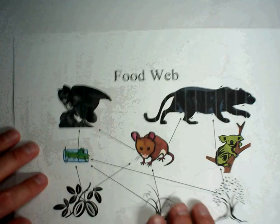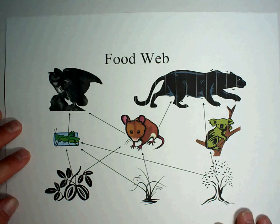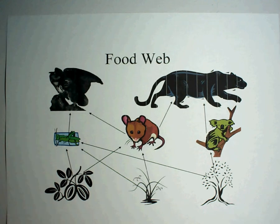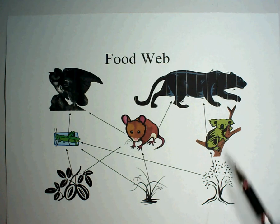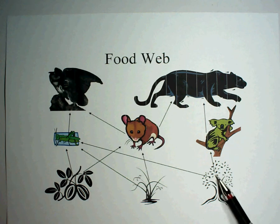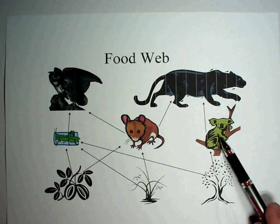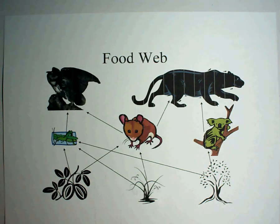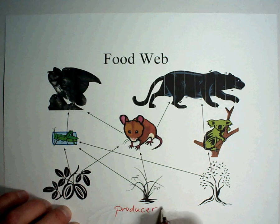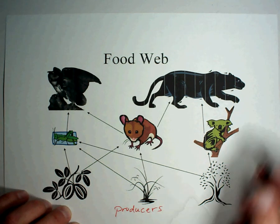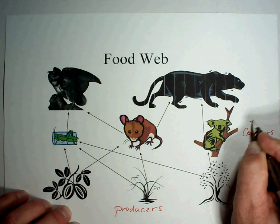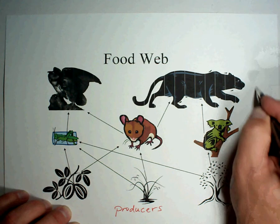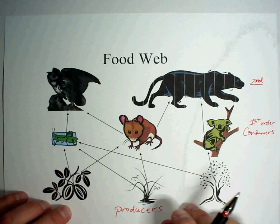Here's a good example of a food web. Sometimes a food web gives you pictures, sometimes just words — let's look at one with pictures first. At the bottom you'll see plants. A koala eats eucalyptus leaves; the arrow goes from the plant to the koala, meaning this goes into his stomach. The arrow points where the energy is going. The producers pass their energy on to the consumers — there are your first order consumers, and the second order consumers at the next level.